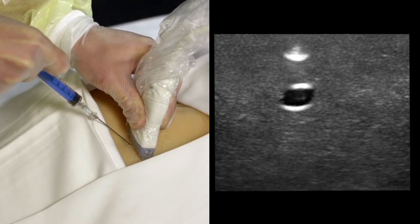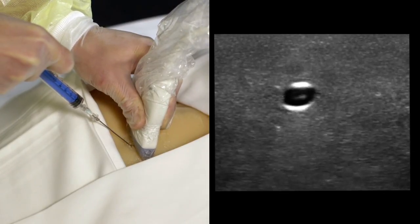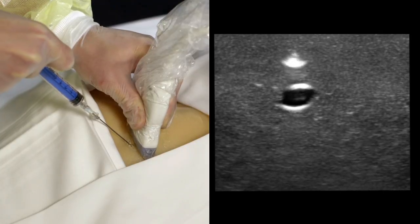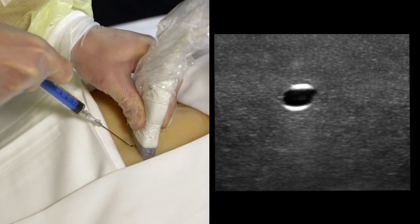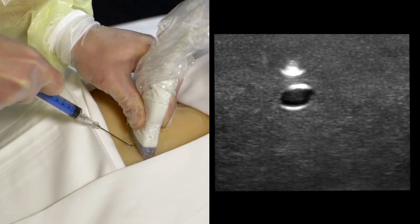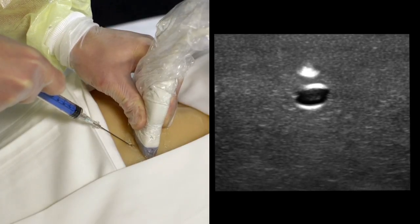Once you've identified the needle tip with your ultrasound probe, advance the needle slightly and then stop. Advance the probe slightly and again visualize your needle tip. Never move the probe and the needle at the same time as you will lose the image of the needle on the screen.